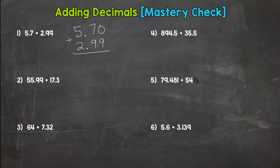Add placeholder zeros in there. And now we are ready to add decimals straight down. Eight and sixty nine hundredths.